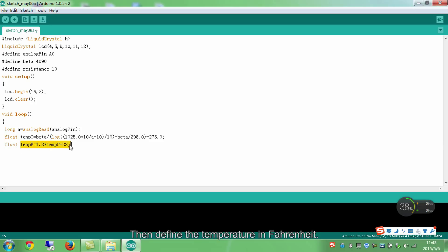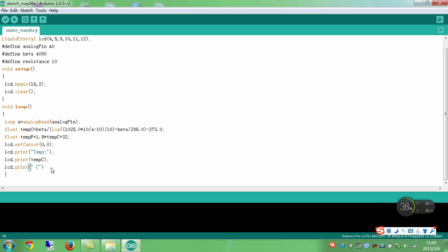Then define the temperature in Fahrenheit. As we know, Fahrenheit equals to 1.8 multiply with Celsius plus 32. Set the cursor at line 0, column 0. From here the characters are to be displayed. Print the character TEMP, which means temperature, on the LCD. Then the value of the Celsius temperature. And the unit Celsius, C for short, on the LCD.